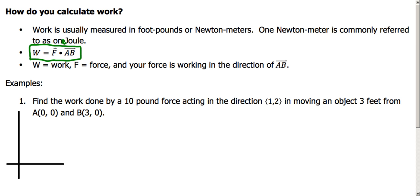Let's go to another application that is more useful in the world of physics: how do you calculate work? Not work at McDonald's or at the movie theater, but work in physics — meaning force and direction. Work is usually measured in foot-pounds or newton-meters. One newton-meter is commonly referred to as one joule. To find work, we take our force vector and our A-to-B vector — the direction and distance of where we're moving an object — and take the dot product of those two. There's a formula: if w is work, f is force acting in the direction of our A-to-B vector.